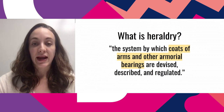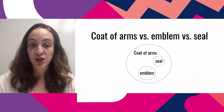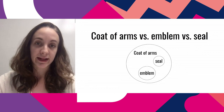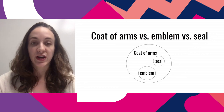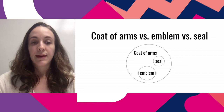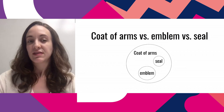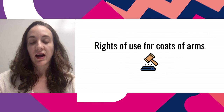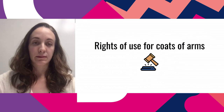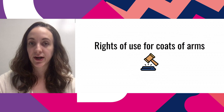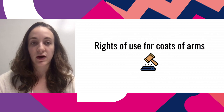I'm going to use the term heraldry — defined as the system by which coats of arms and other armorial bearings are devised, described, and regulated. It's the overarching concept. I'll also use the terms emblem and seal interchangeably with coat of arms. They're considered subsets of coats of arms, so if I show you something that looks more like a seal for a letter, it's also considered a coat of arms.